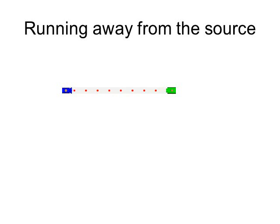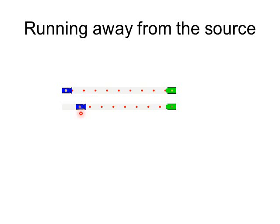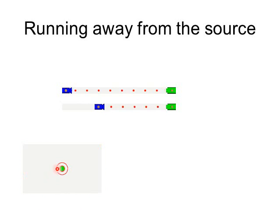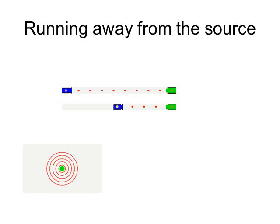The last case is if the observer runs away from the source. Even though the paintballs still hit Ani, they do so less frequently. The observed frequency is significantly lower. Similarly, if you run away from the sound source, the wavefronts hit you less often, resulting in a lower observed frequency.